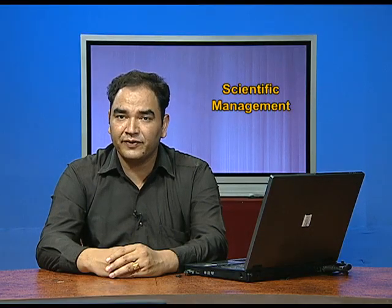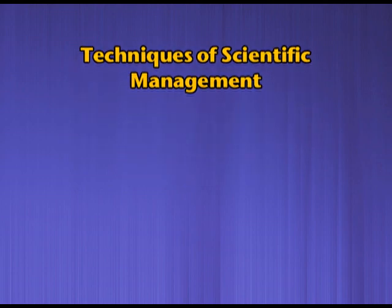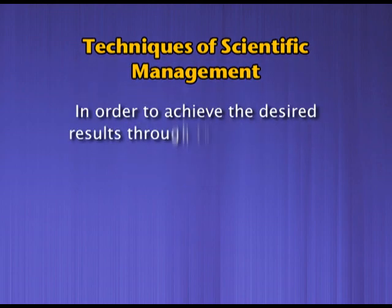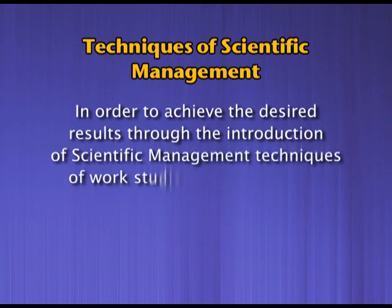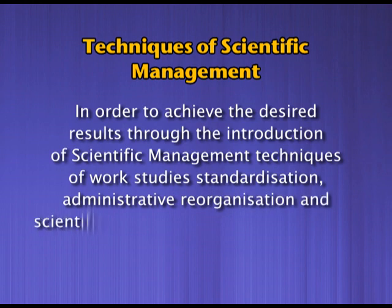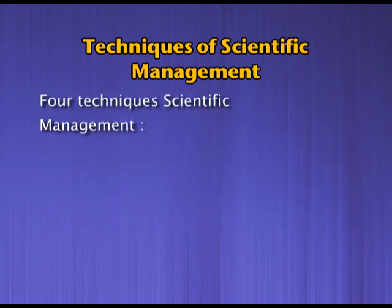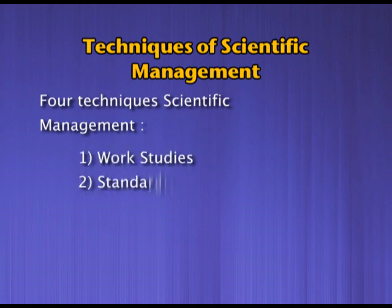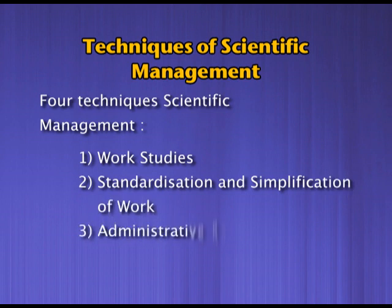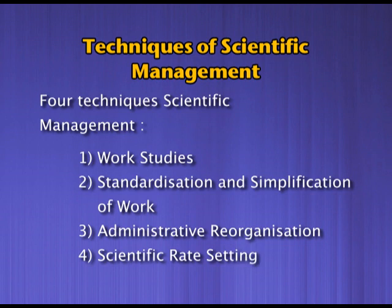We have now come to an end of the principles of scientific management, which are typically related to the factory. Now let us discuss the techniques of scientific management. To achieve desired results, techniques of work studies, standardization, administrative reorganization, and scientific rate setting should be adopted. There are four techniques: first, work studies; second, standardization and simplification of work; third, administrative reorganization; and fourth, scientific rate setting, also called the differential piece-based system.